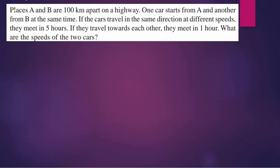Places A and B are 100 kilometers apart on a highway. One car starts from A and another from B at the same time. So cars are at A and B, and the distance between them is 100 kilometers. If both cars start traveling in the same direction at different